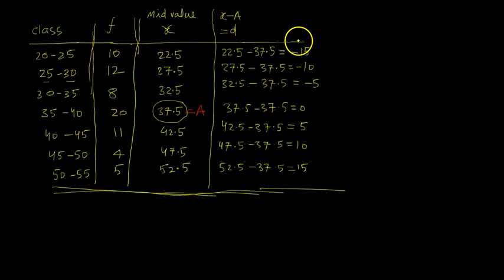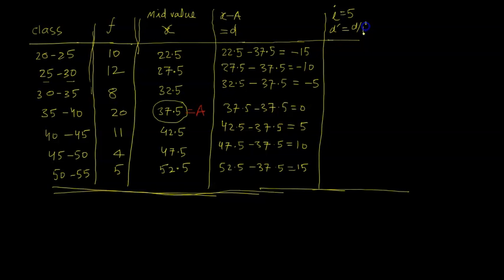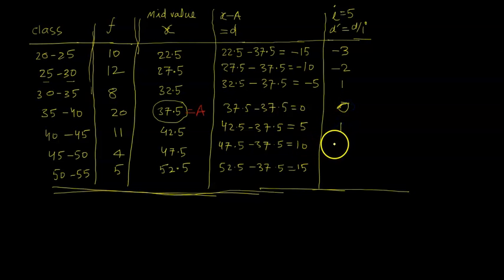Now I'll involve the step deviation method. All d values are −15, −10, −5, 0, 5, 10, 15 — there is a common factor i=5. I calculate d-dash = d/i: −15/5=−3, −10/5=−2, −5/5=−1, 0/5=0, 5/5=1, 10/5=2, 15/5=3.